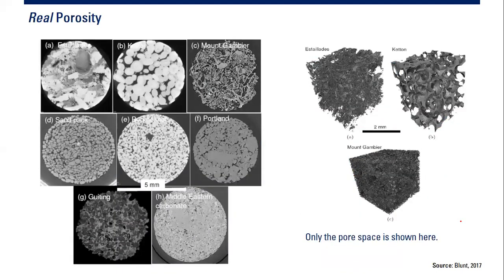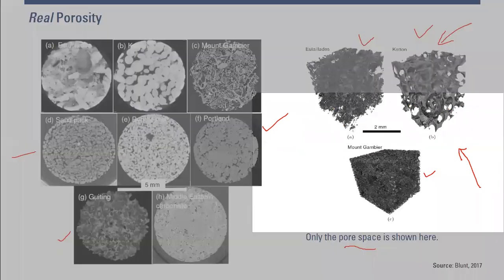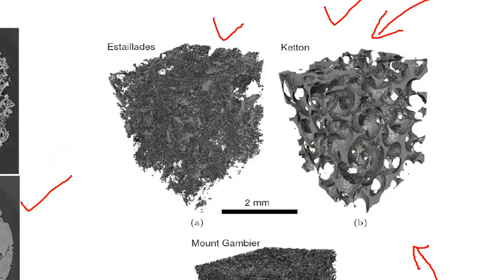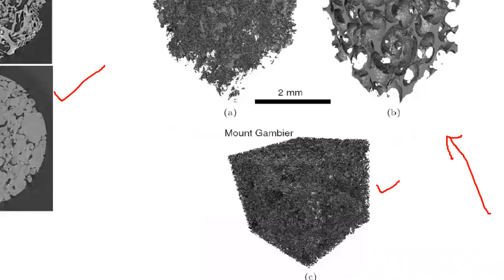Looking at real porosity by rock type — sand pack, Portland sand, and grit — these visualizations show not the matrix but only the pore space network. Using laboratory techniques (possibly infrared scanning), we can visualize the pore network and see the connections between pores. In these three cases, effective porosity appears quite high because the pores are well connected, though some ineffective porosity also exists.